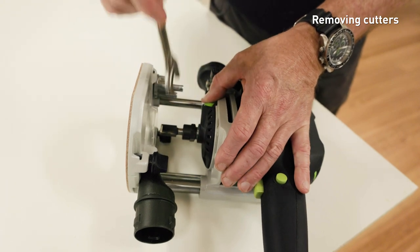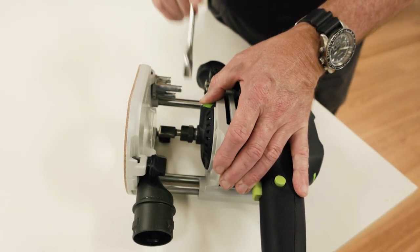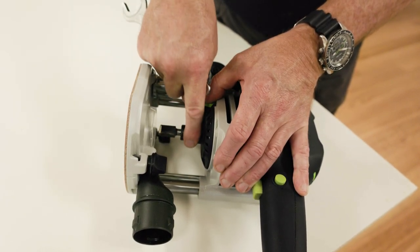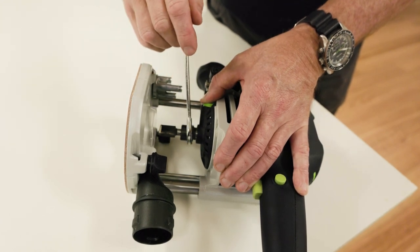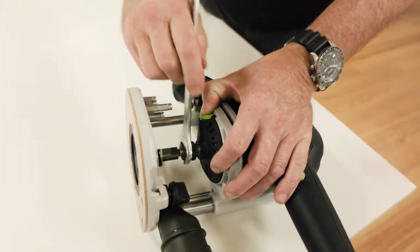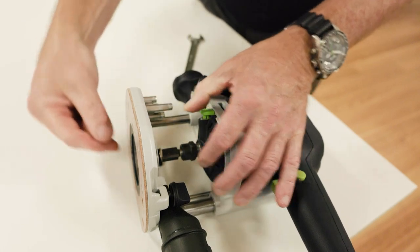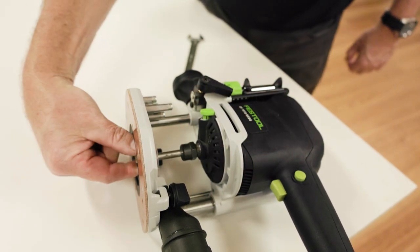To remove the cutter, turn the spindle until the spindle stop locks. Loosen the collet nut until resistance is felt. Overcome this resistance by turning the nut until it loosens once again. The cutter can now be removed.